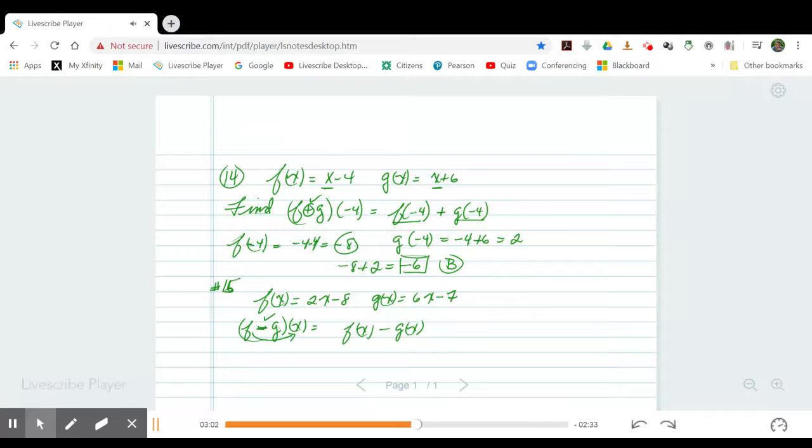What is the f of x function? It's right here. It's 2x minus 8. Here's the deal. You're subtracting a polynomial. It's got two terms. You're subtracting g of x. What you need to do is put that in parentheses. And the reason being is that this minus sign is going to affect both these terms within the parenthesis.